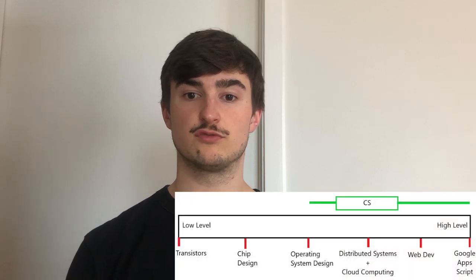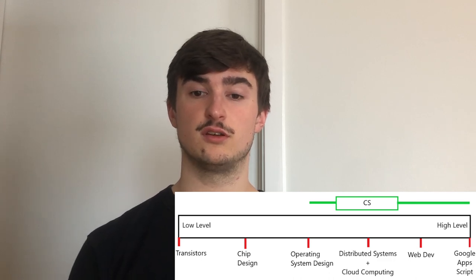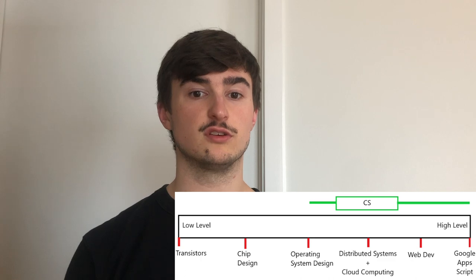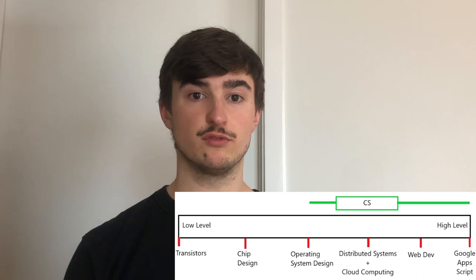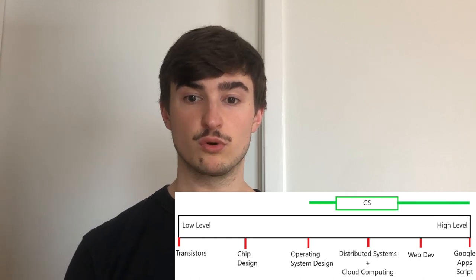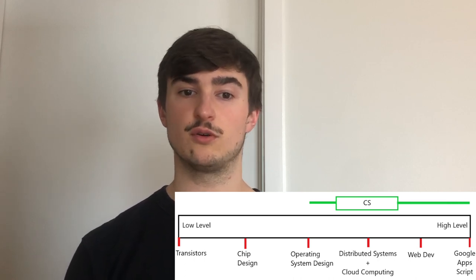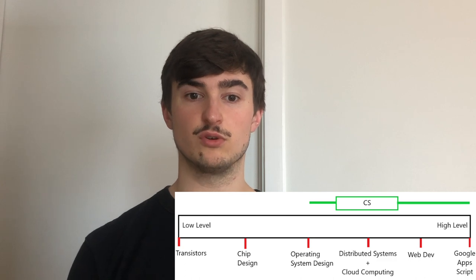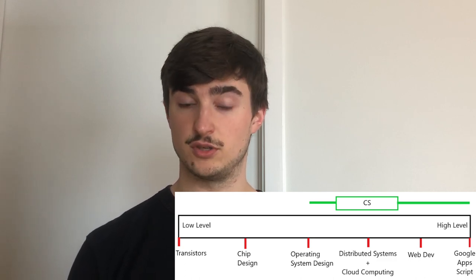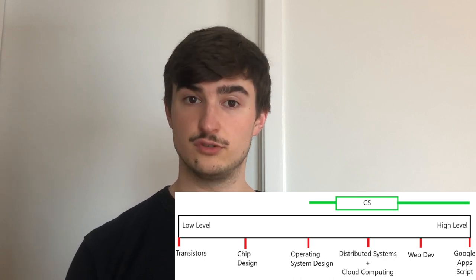Moving on to CS, we again move to the right on our spectrum. CS's box ranges from operating system design to somewhat high-level topics such as distributed systems, cloud computing, and database design, with a right whisker which extends to the end of the spectrum. CS students are not required to take any course below the level of computer architecture, but may take up to four EE courses if desired. This would theoretically allow students to gain significant exposure below the level of computer architecture, but it would require significant planning ahead of time and would make the degree much harder than EE and CompE — so CS's left whisker extends only to computer architecture.